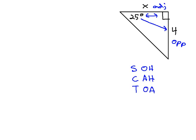So here we have an adjacent and an opposite, or an opposite and adjacent. And you notice the only trig ratio that uses both of those is the tangent.